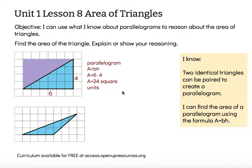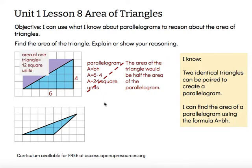Well, the triangle, the original blue triangle is only half of that parallelogram. I needed two of those triangles to make the parallelogram. So I could just cut that in half, and then I would have the area of the triangle. The area of the triangle would be half the area of the parallelogram. So then I would just cut 24 in half, and know that the area of the original triangle, that blue triangle, would be 12 square units.